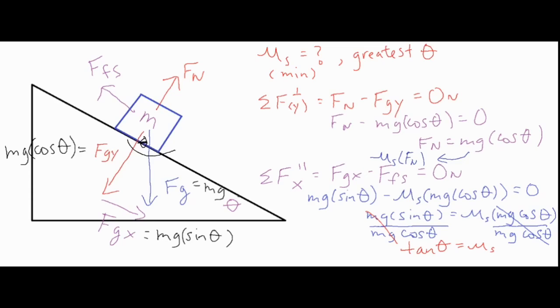So that gives us two things. If we want to know the minimum value of μs that allows the block to not slide down the ramp, it's just tangent of the angle. So if we know the angle is 30 degrees, we can just go ahead and plug it in there. If we know it's 40 degrees, we plug it in there, and that will directly give you your coefficient of static friction. Now if you want to go the other way around and you have your coefficient of static friction and you want to solve for the angle, what you would do then in that case is take the inverse tangent of μs, and that is equal to your theta.